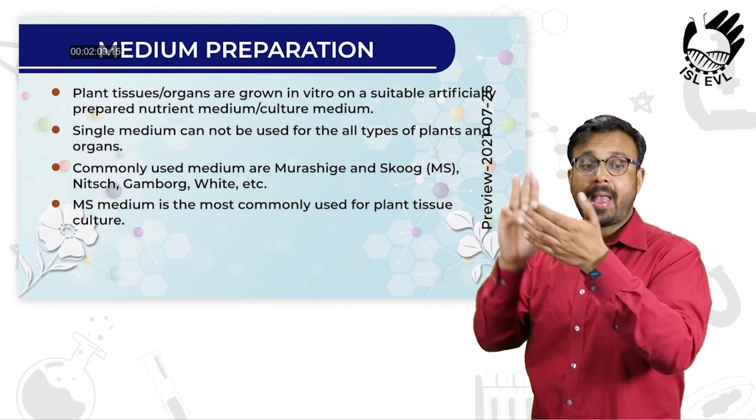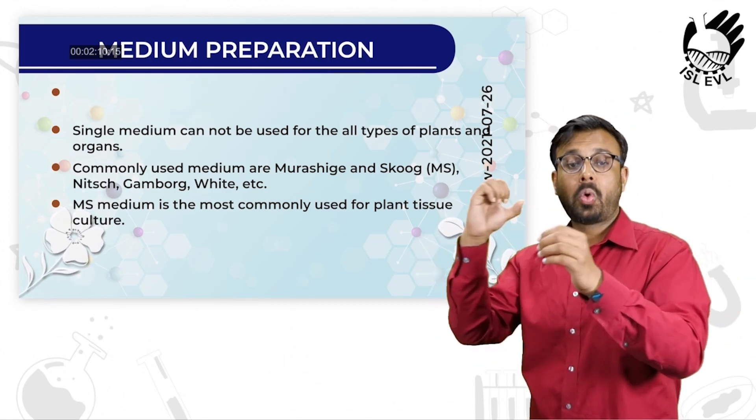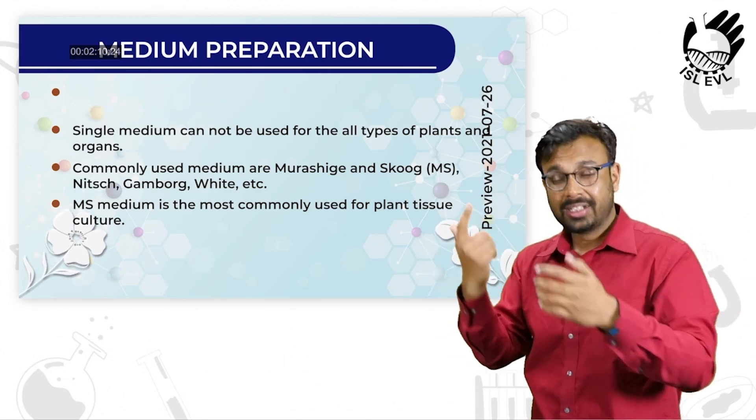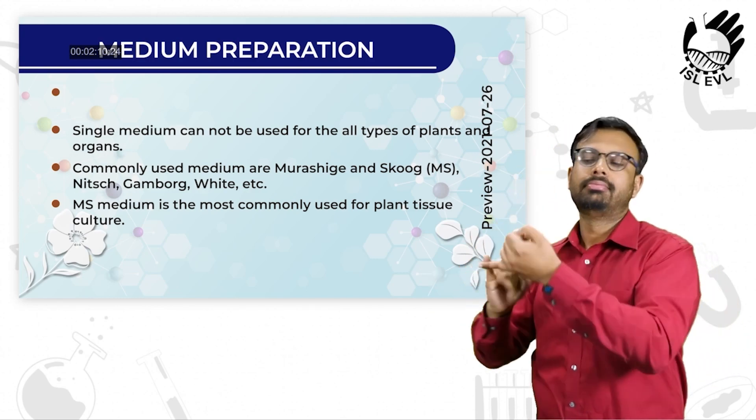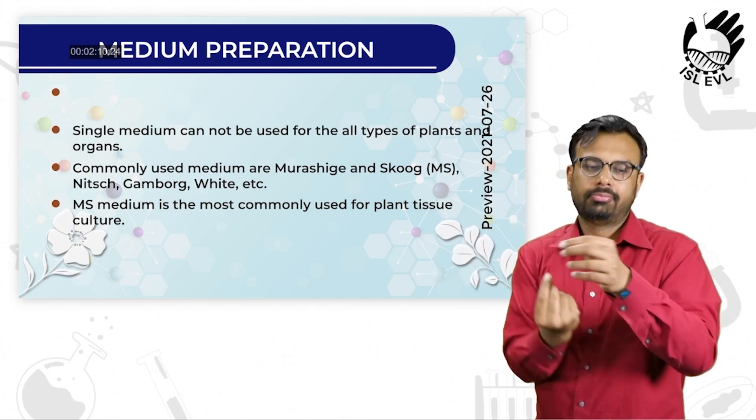Gamborg, White, and others are among the commonly used media. MS medium is the most commonly used for plant tissue culture.